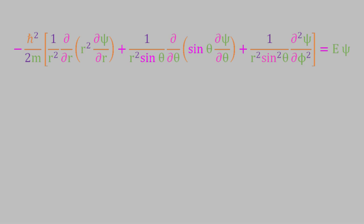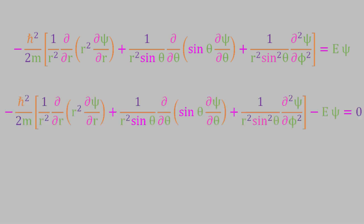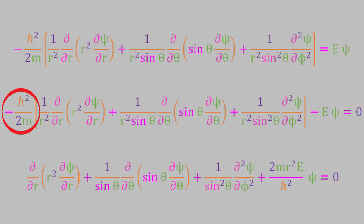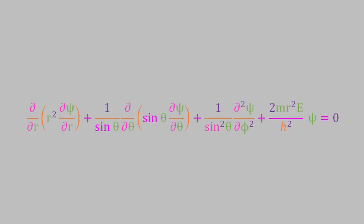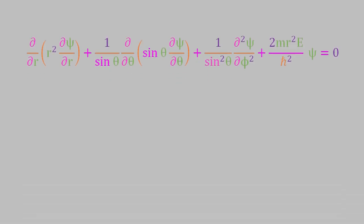First, let's move the E psi term to the left side of the equation. Next, we'll get rid of the constant out front by multiplying both sides by negative 2mr squared over h-bar squared. Believe it or not, what we get as a result is a much more manageable equation than the one we had a moment ago. Here's why.